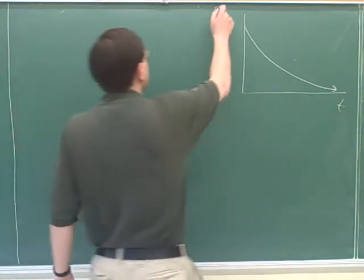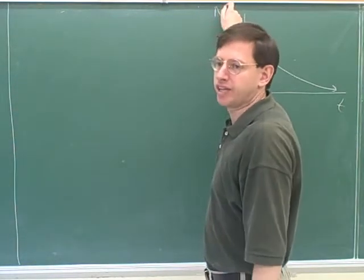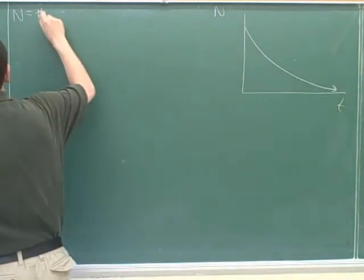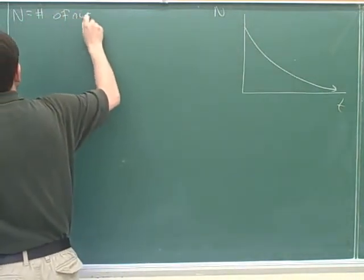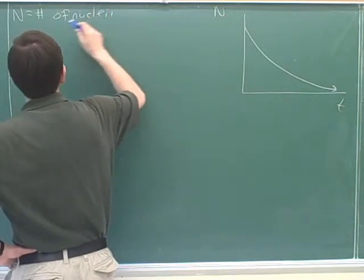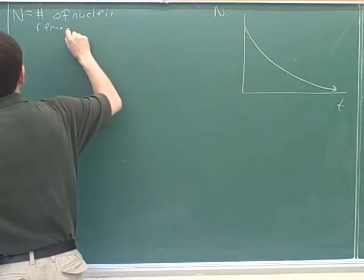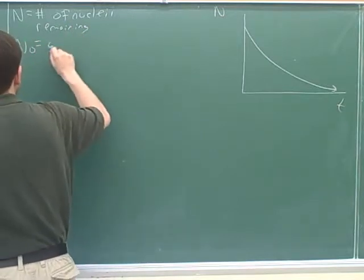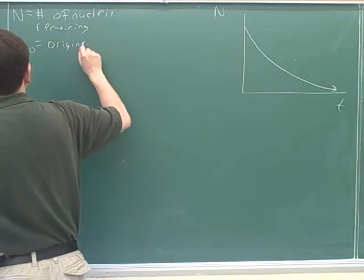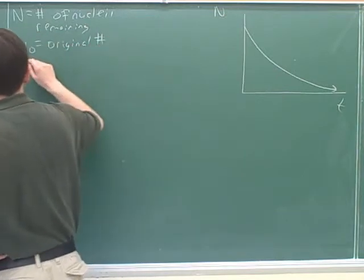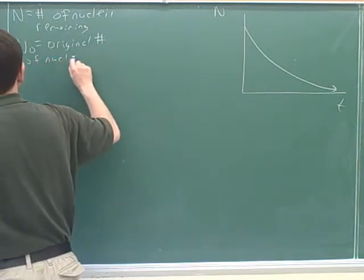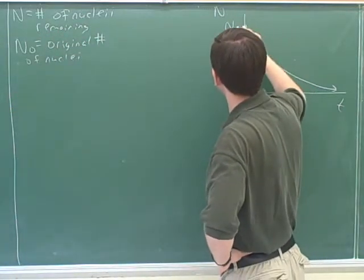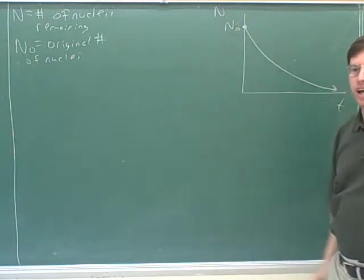And that means, so capital N here is standing for the number of nuclei. You want to have notice that capital N is the number of nuclei remaining. And N sub 0 is the original number of nuclei. So this point over here would be N sub 0. This is the original number of nuclei.